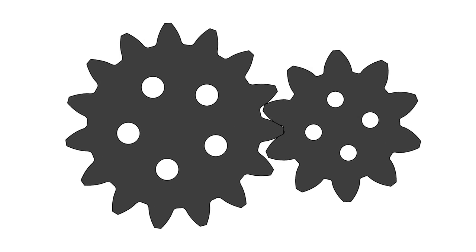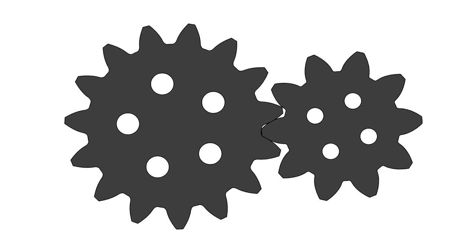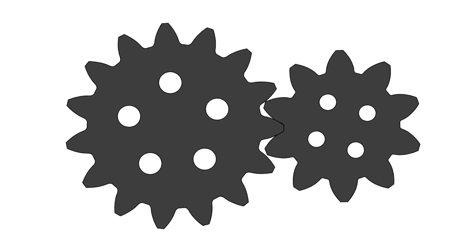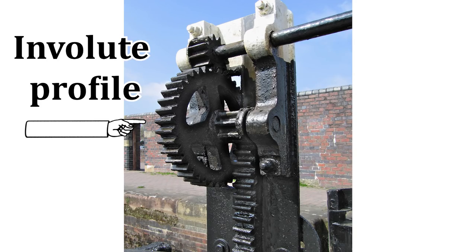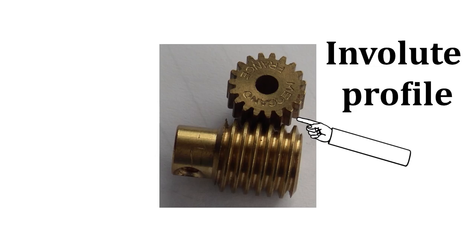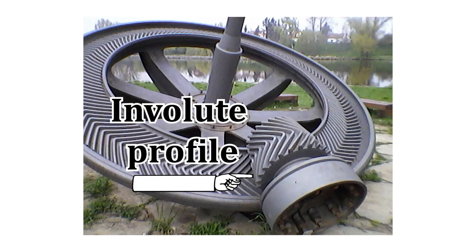Using involutes for gear teeth profiles is advantageous not only because there is a smooth transfer of motion from one gear to another, but you'll notice the angle at which pressure is being applied from one gear to another stays constant, and the point at which pressure is being applied moves at a constant speed. This results in a situation where there's no unpredictable stress going from one gear to the other, and so you'll see this methodology of gear construction pop up everywhere, even in places where you would least expect it.